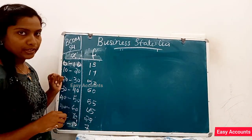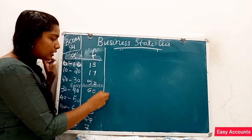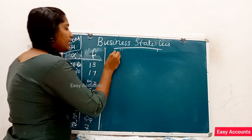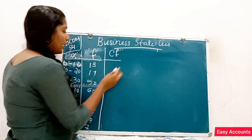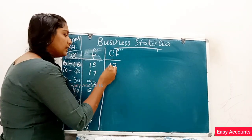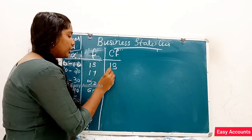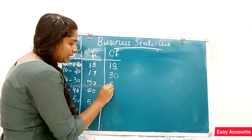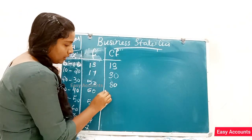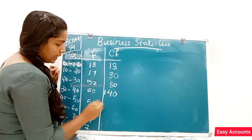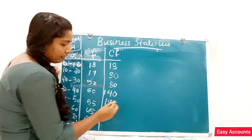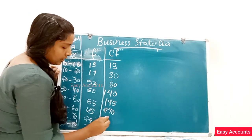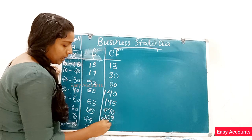The cumulative frequency is being constructed. That's the CF: 13, 30, 80, 140, 195, 240, 263, 270.